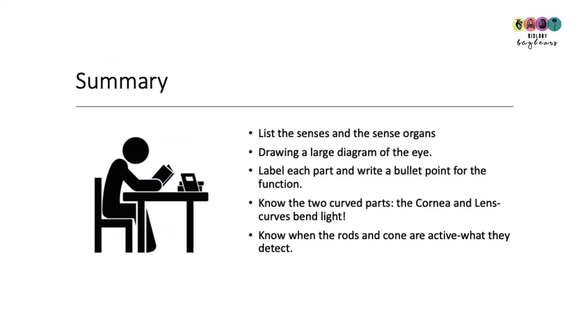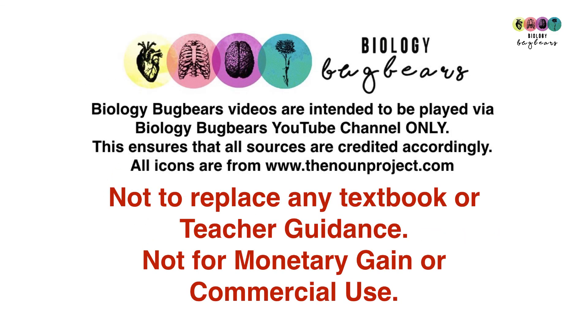So at the end of this you should be able to list the senses and the sense organs. You should be able to draw a large diagram of the eye. Start with that. If you're going to study the eye, draw a huge diagram of the eye and label it and write a bullet point for each label. Know little details like the curved parts of the eye, the cornea and the lens, and remember if things are curved they bend light inwards. Know when the rods and the cones are active, what type of light they detect. So the best of luck. Make sure you're using your textbook, you're doing past papers, you're writing your own notes and you're doing a bit of work.